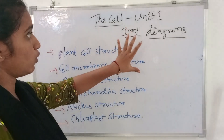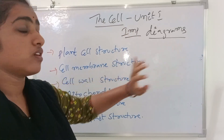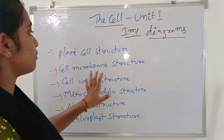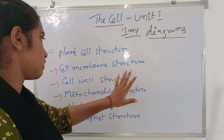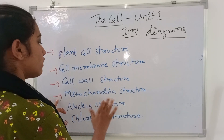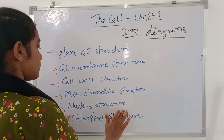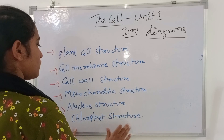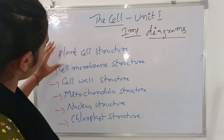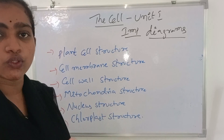These are the main and important diagrams. The important diagrams are: plant cell structure, cell membrane structure, cell wall structure, and nucleus structure. These are the main and important diagrams, and we will explain the same explanation.